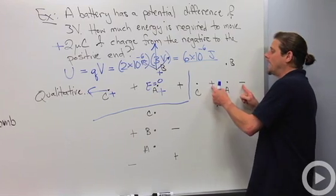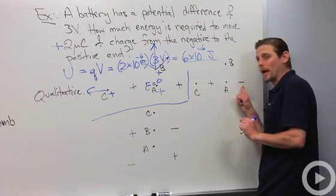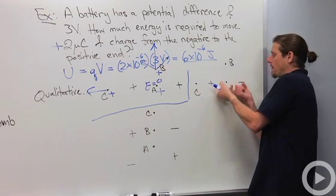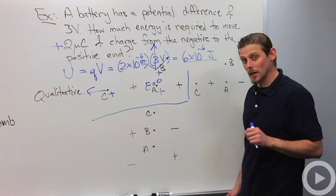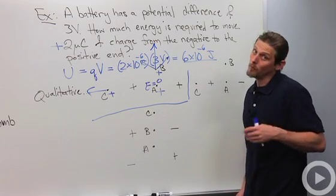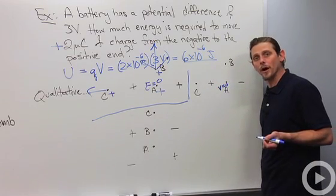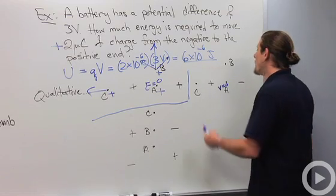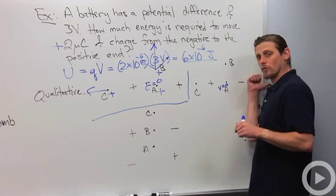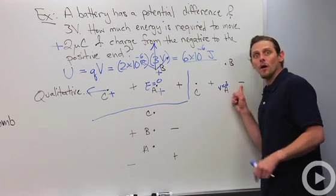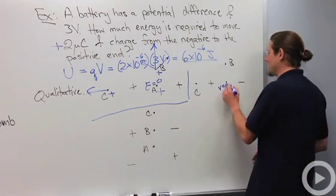In the second example I've got a positive charge and a negative charge. At point A, it's the same distance from the positive and the negative charge, so the electric potential is zero. For the electric field: the positive charge pushes a test charge at A to the right, and the negative charge also pulls a test charge at A to the right — so the electric field points to the right.